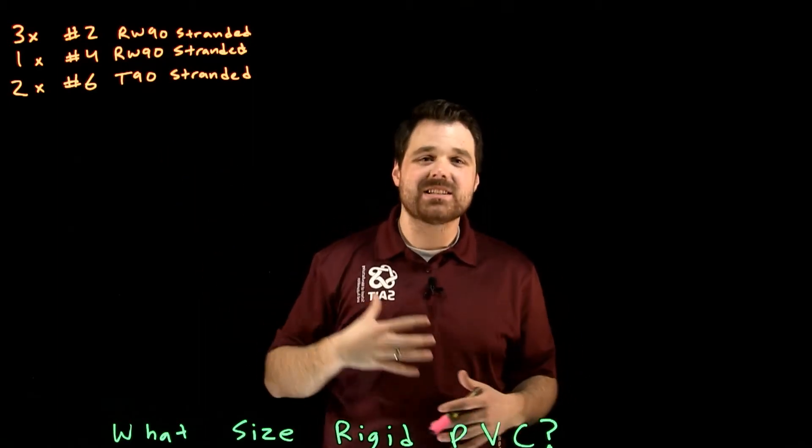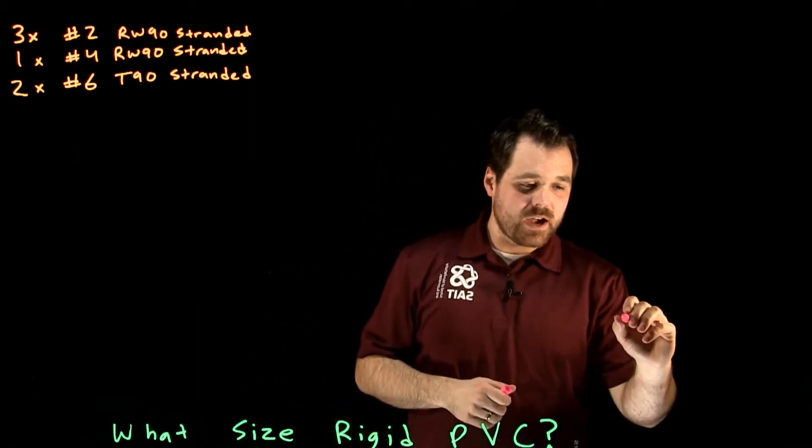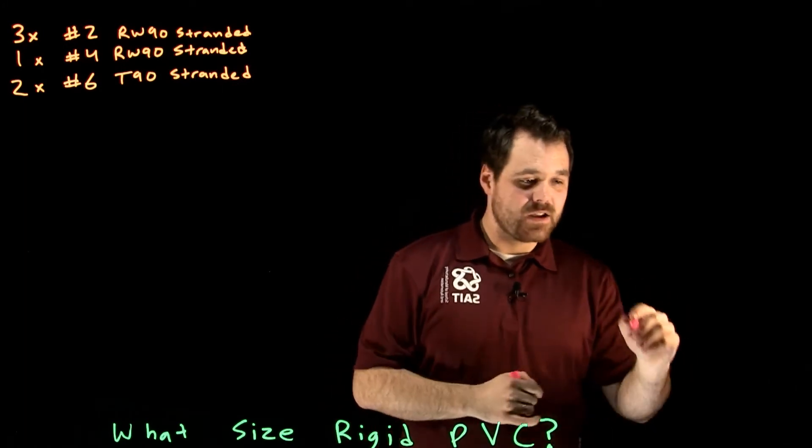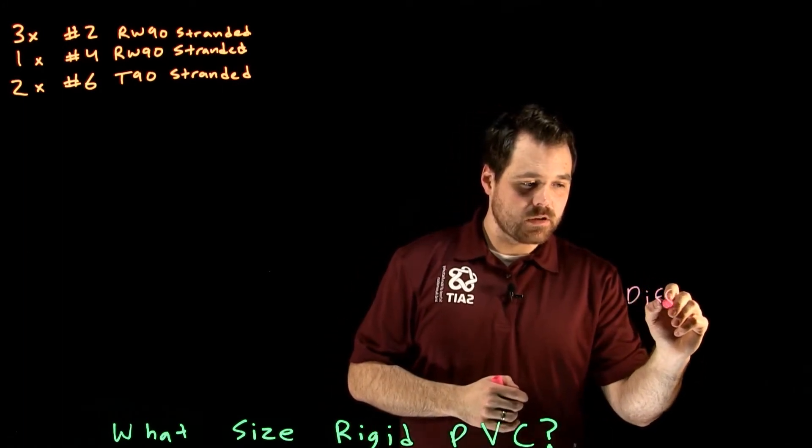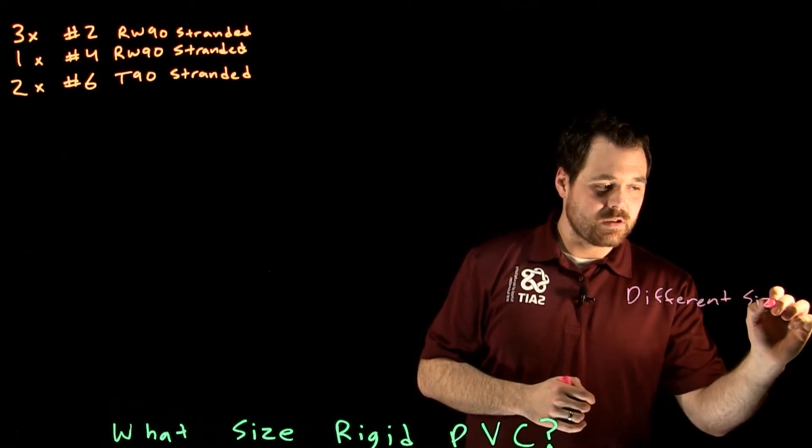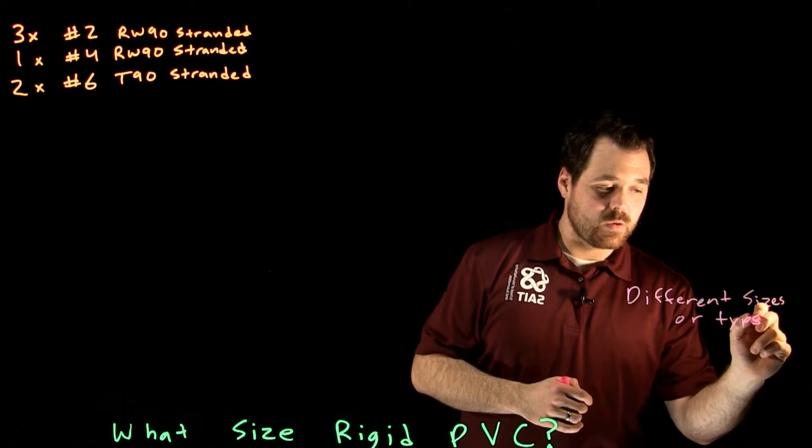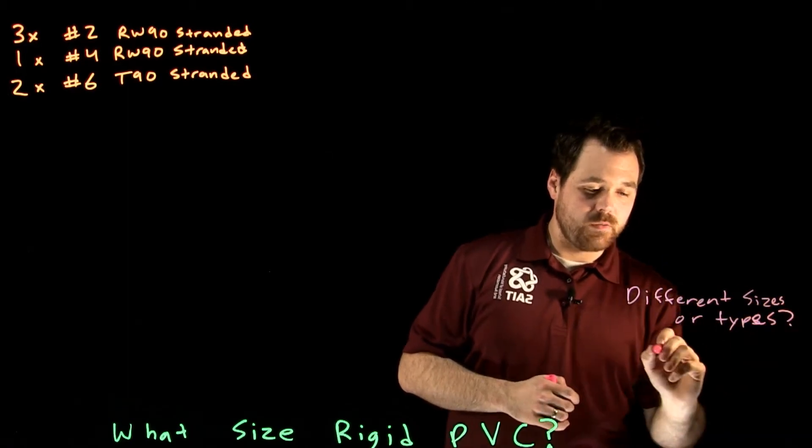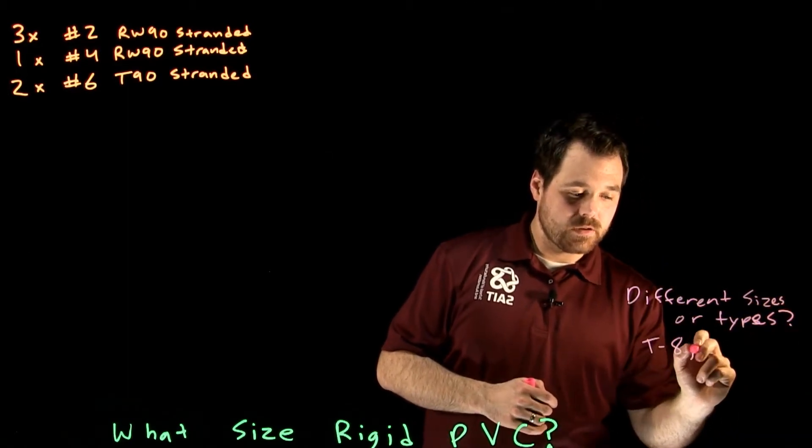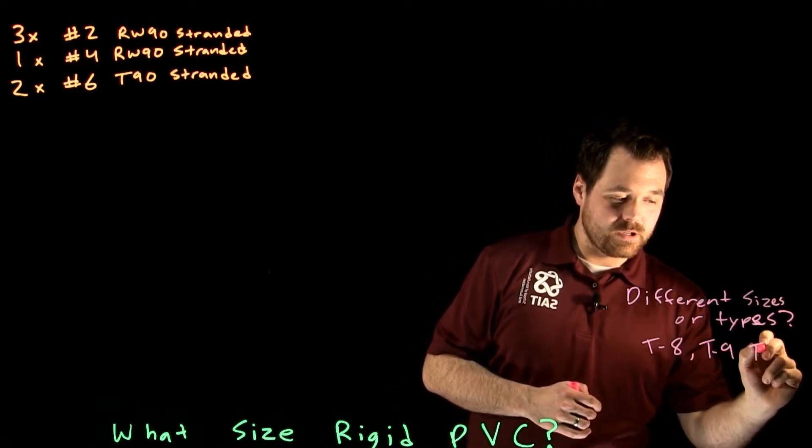So because these are different sizes and different types of insulation of conductor, what we have to do is we have to use table eights, nine and ten. So we have different sizes or types of wire or conductor. We're going to use table eight, table nine and table ten.